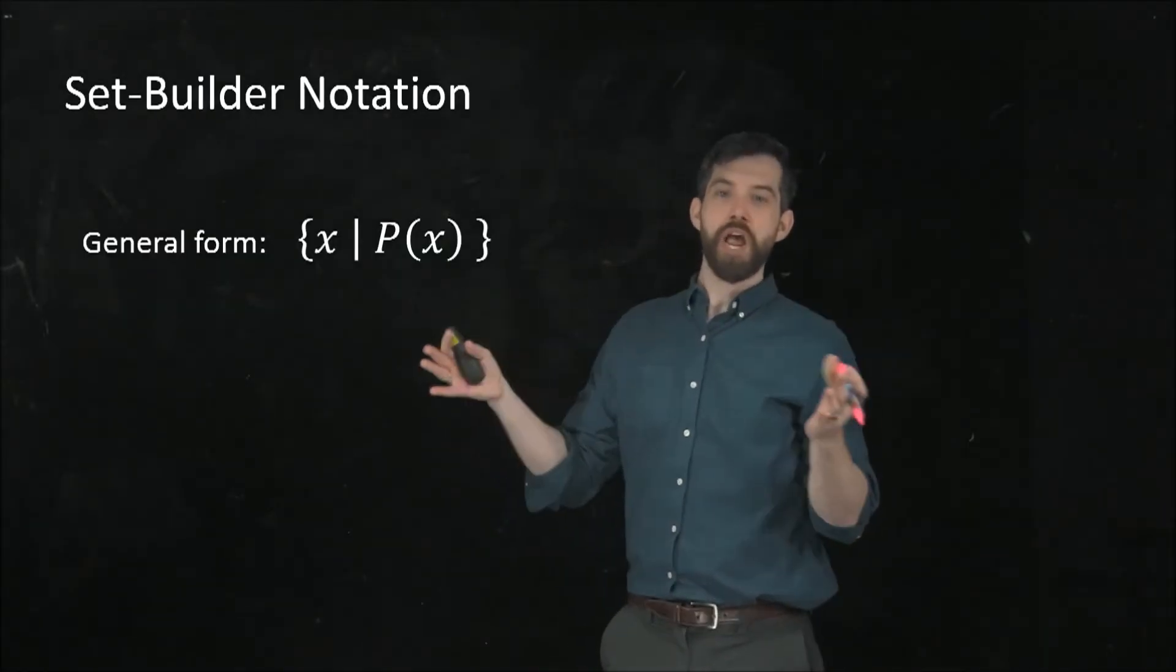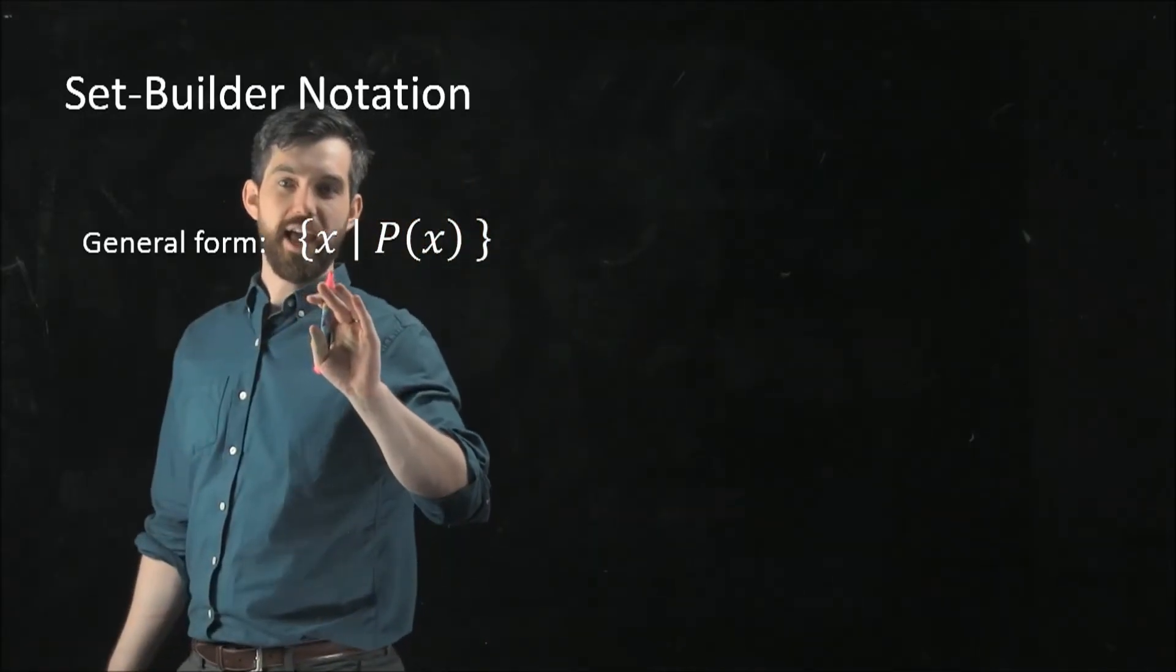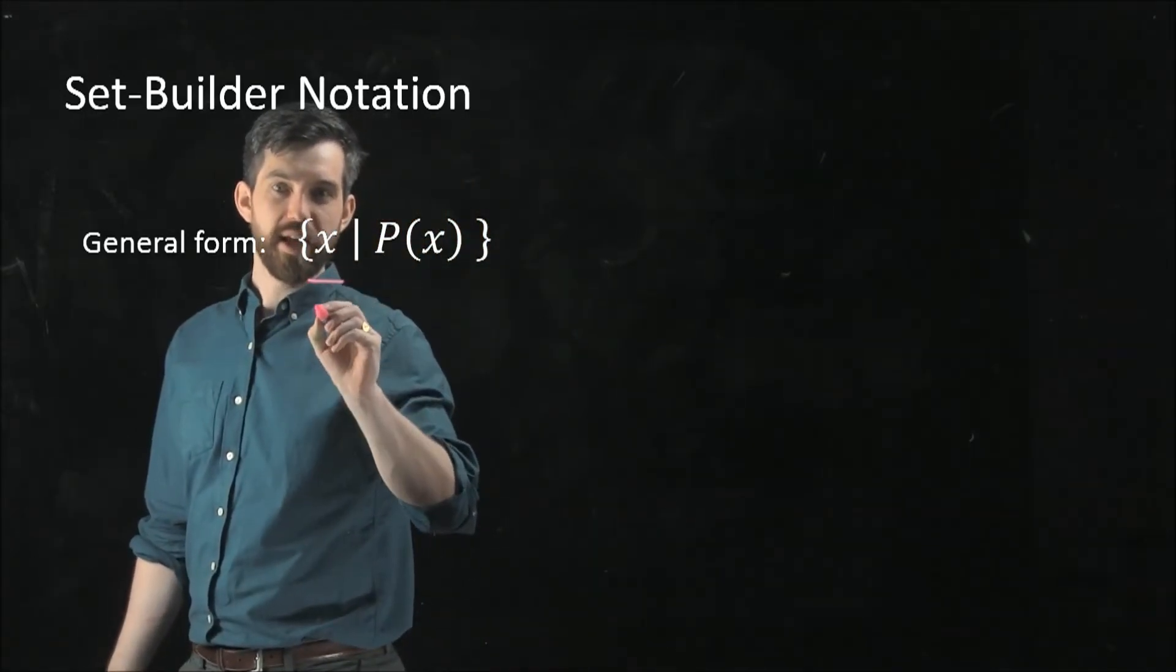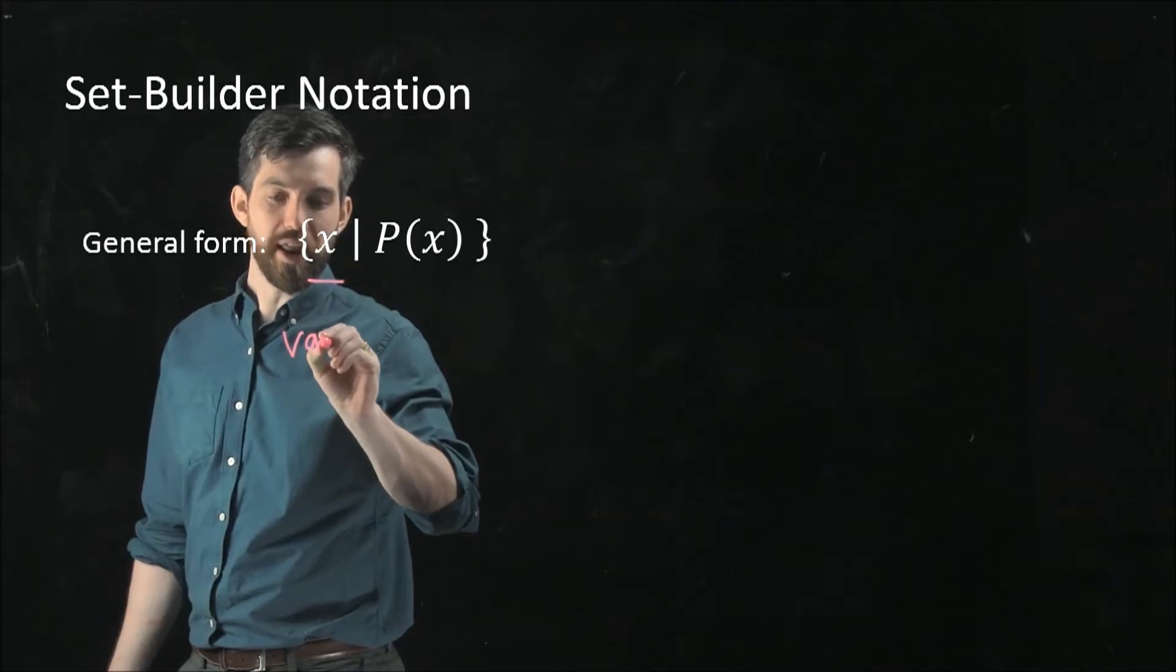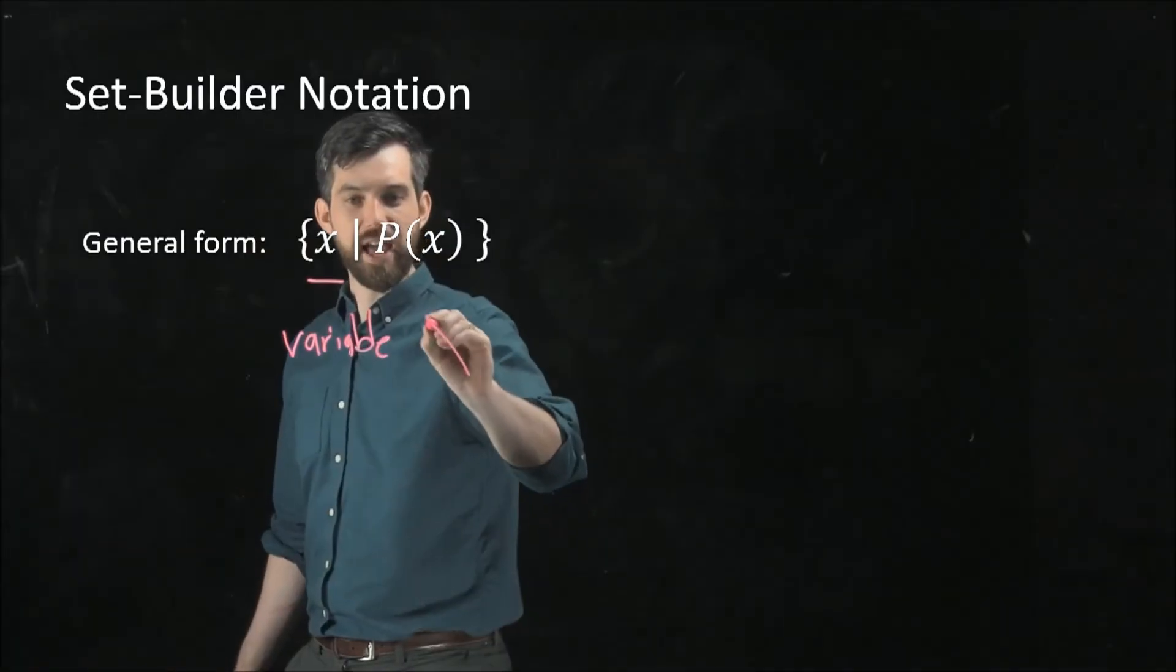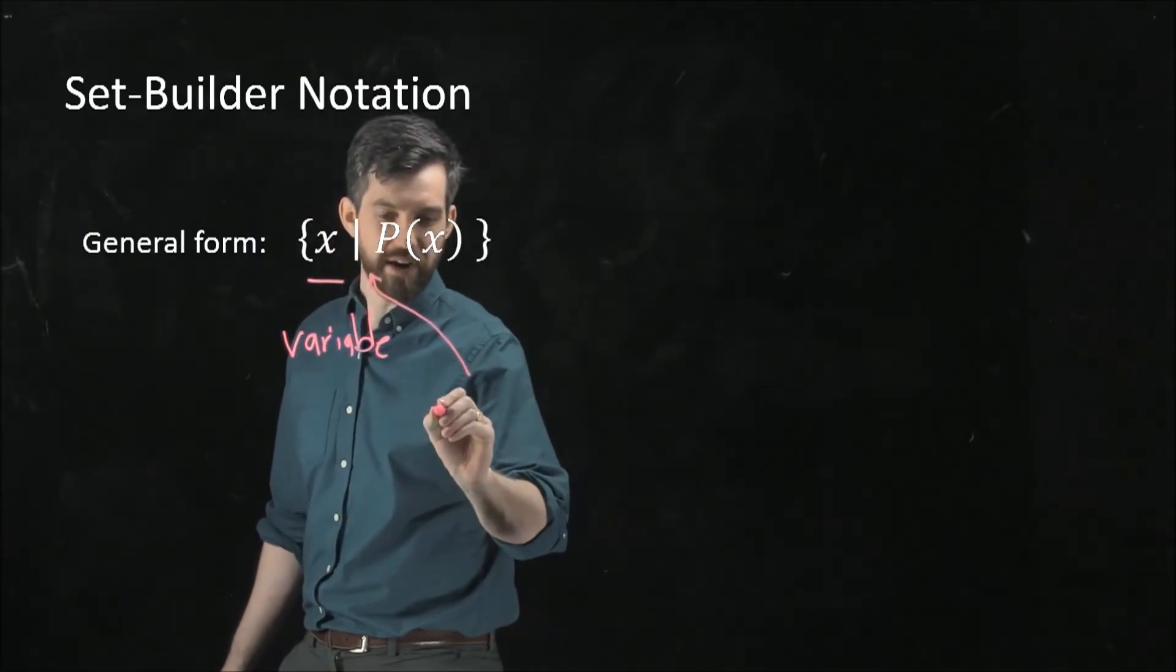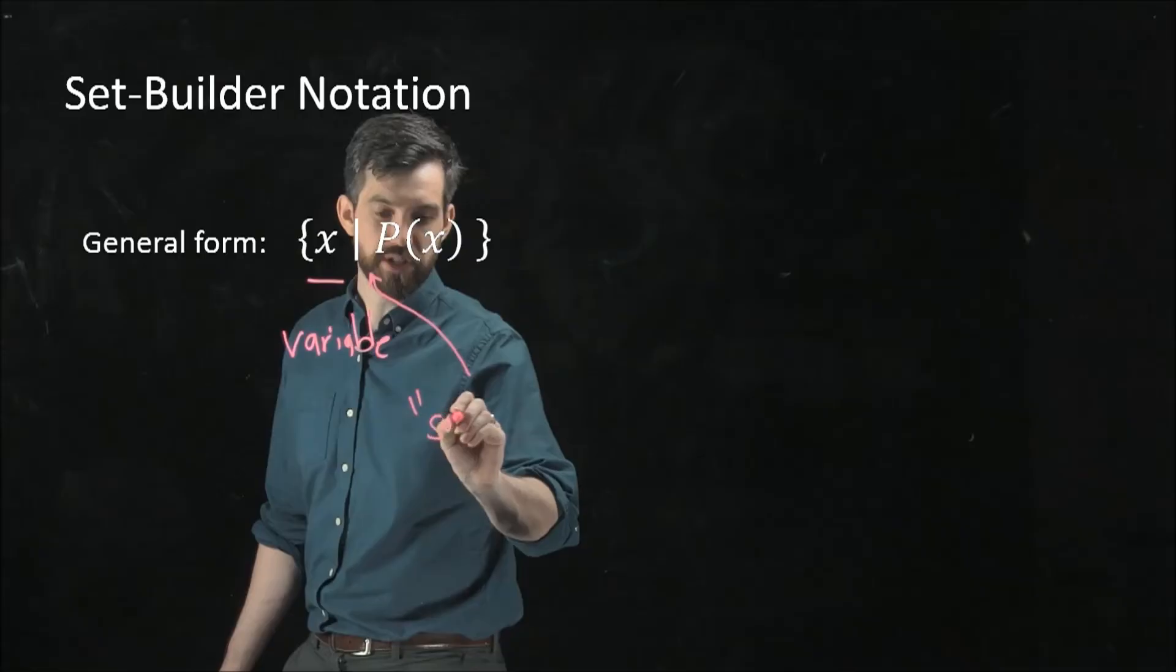So this is the general form for my set builder notation. And the idea is that I have x, which is thought of as being a variable. It could be anything. And then I have this line, and this line here is a shorthand. It means such that.